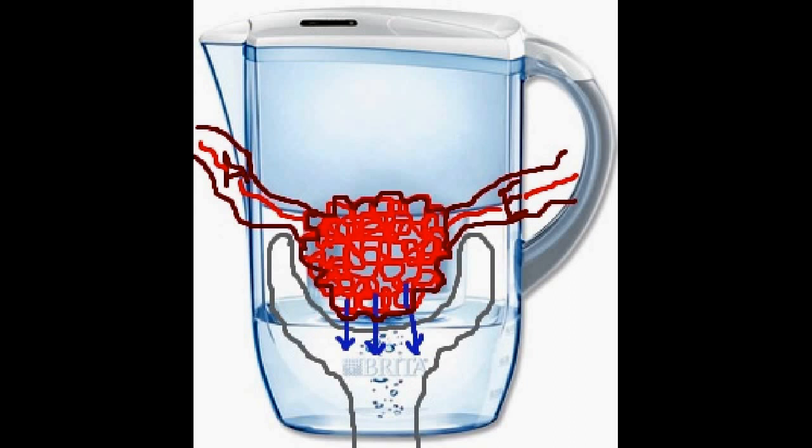Then whatever is too big to be filtered or doesn't have the right charge to be filtered leaves through the efferent arteriole into the general circulation.